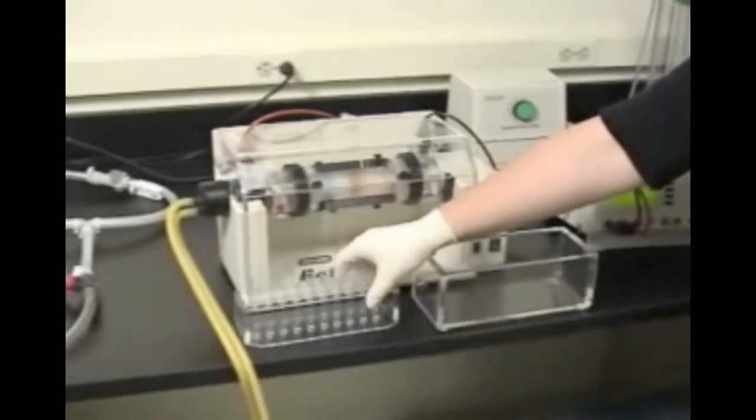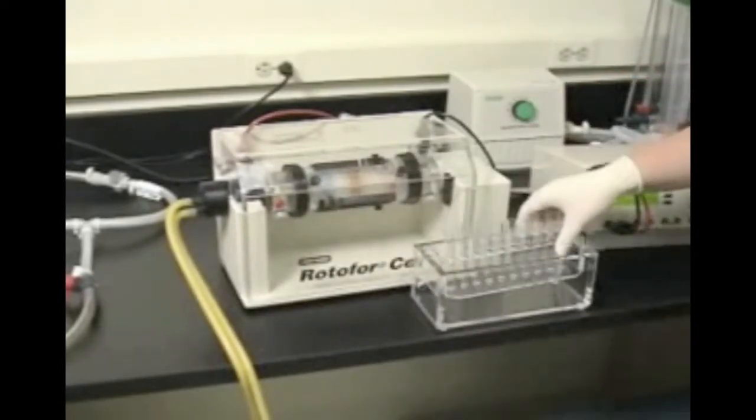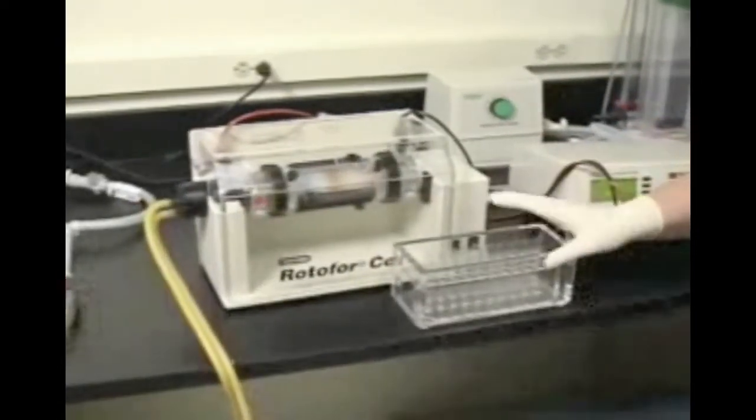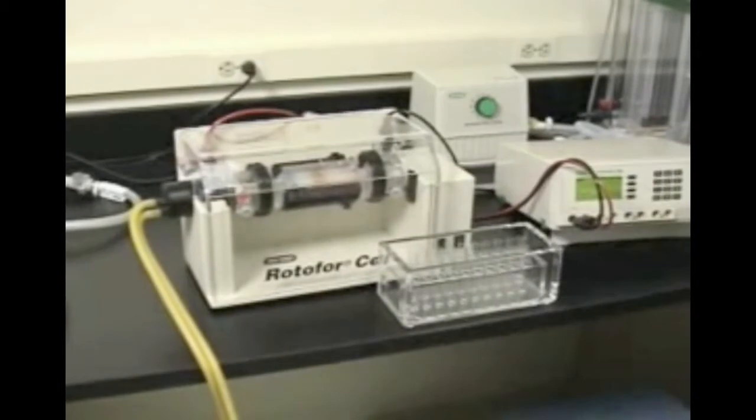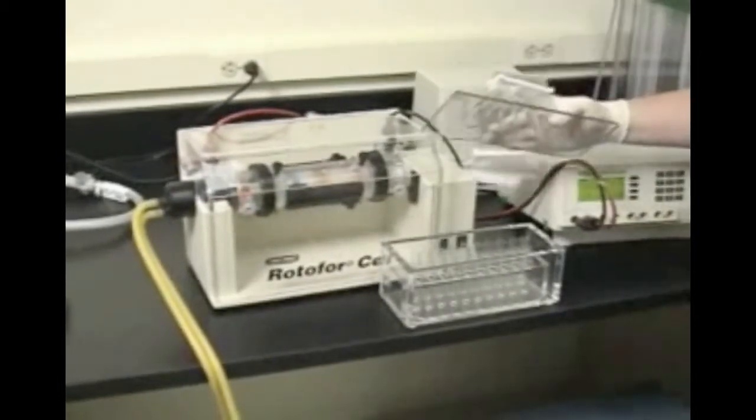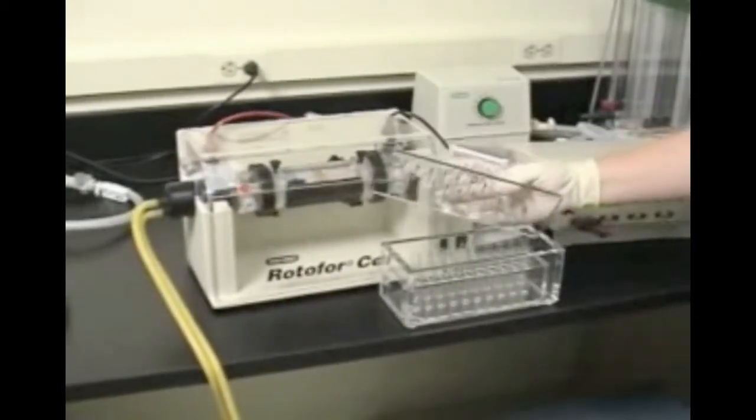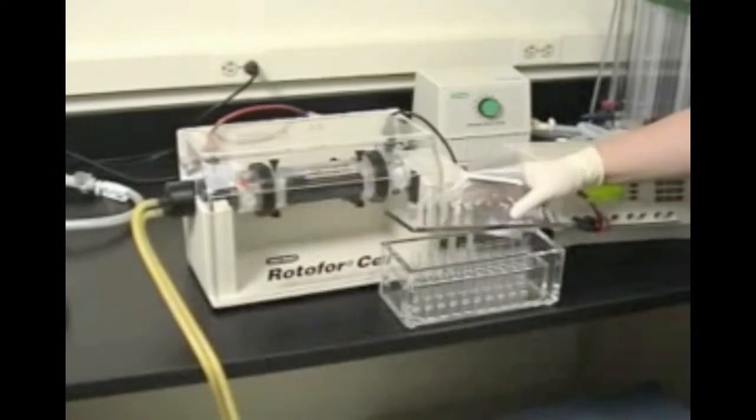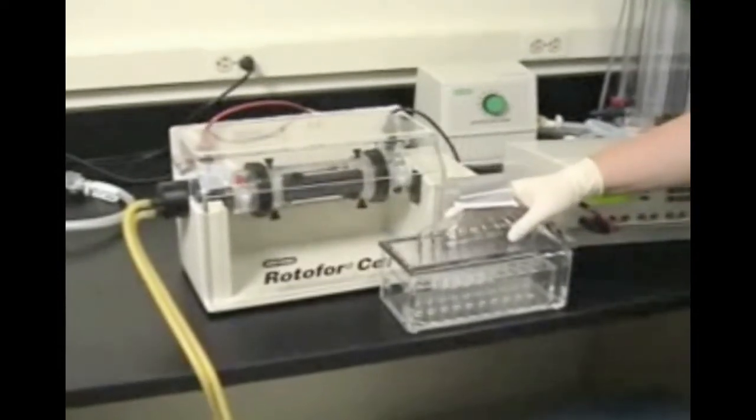In the meantime, load the test tube rack from the harvesting apparatus with 20 culture tubes and place it inside the harvesting apparatus. Place the lid on the apparatus making certain that each stainless steel collecting tube is inside a test tube.